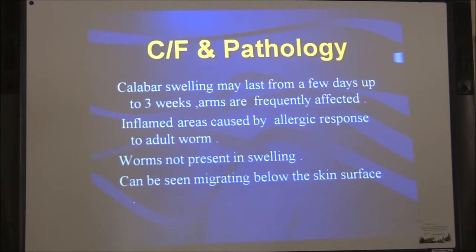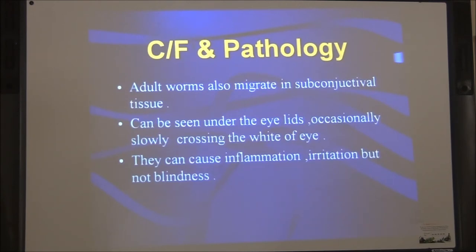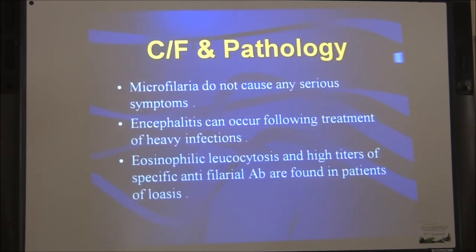Calabar swelling may last from a few days up to 3 weeks; in this case the wrists are frequently affected. The inflamed areas are caused by allergic response to adult worms — the worms are not present in the swelling itself but can be seen migrating below the skin surface. Adult worms also migrate in subconjunctival tissue and can be seen under the eyelids occasionally slowly crossing the white of the eye, causing inflammation and irritation but not blindness. The microfilaria do not cause serious symptoms, but encephalitis can occasionally occur. Eosinophilic leukocytosis and high titers of specific anti-filarial antibodies are found in patients with loiasis.